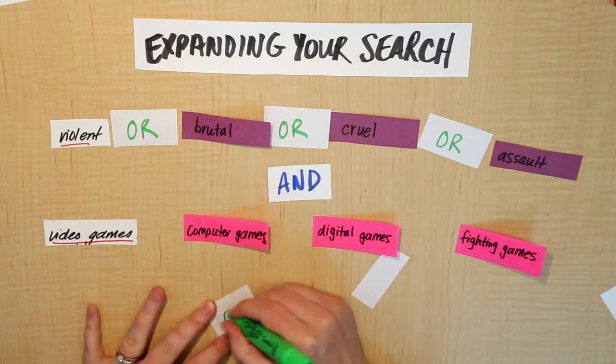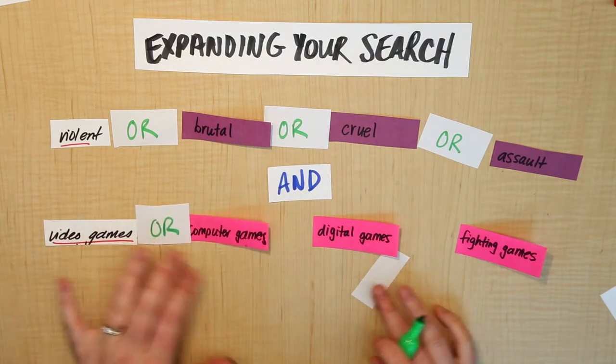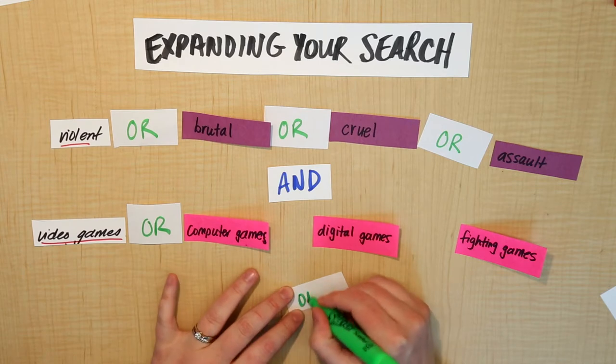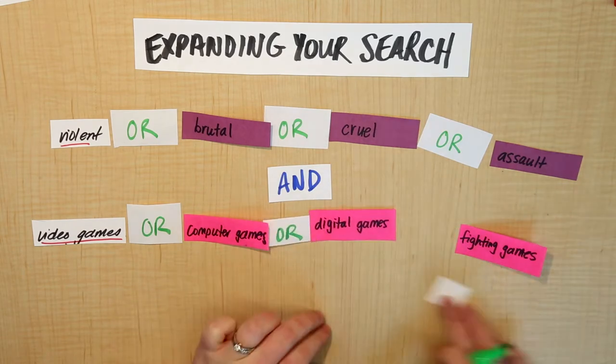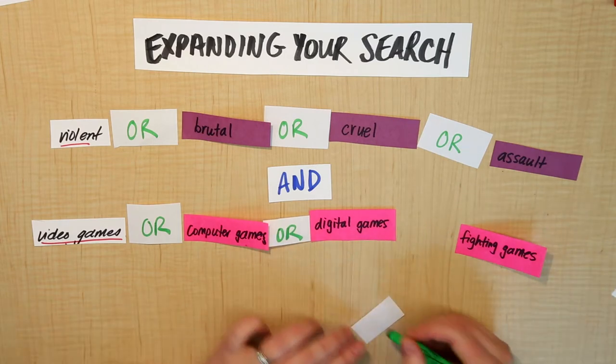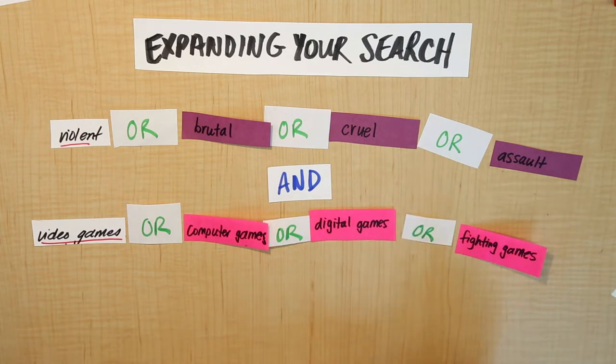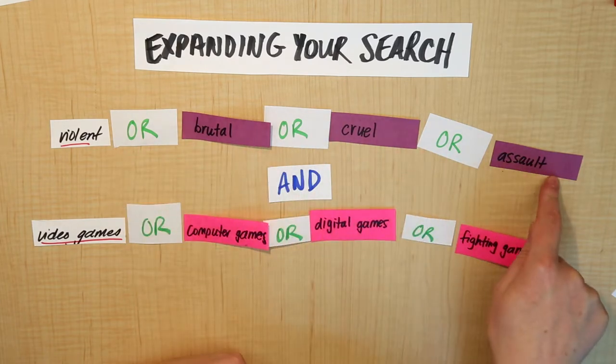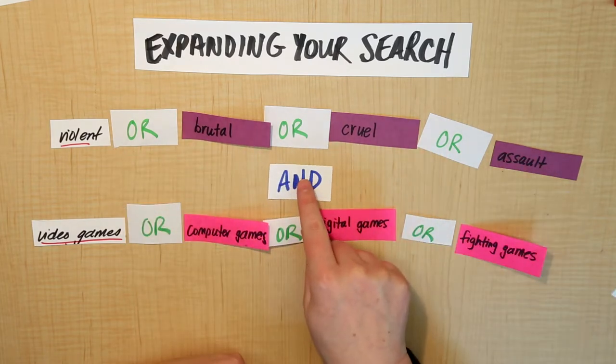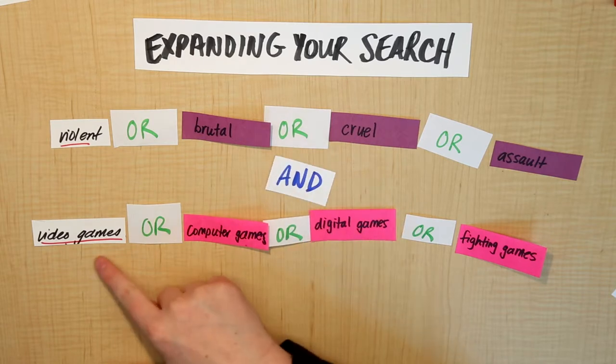So we said OR, OR, OR, and again OR. So now what we're saying is any of these words are okay, and we also have to have any of these words: video games OR computer games OR digital games OR fighting games. And then our third concept.